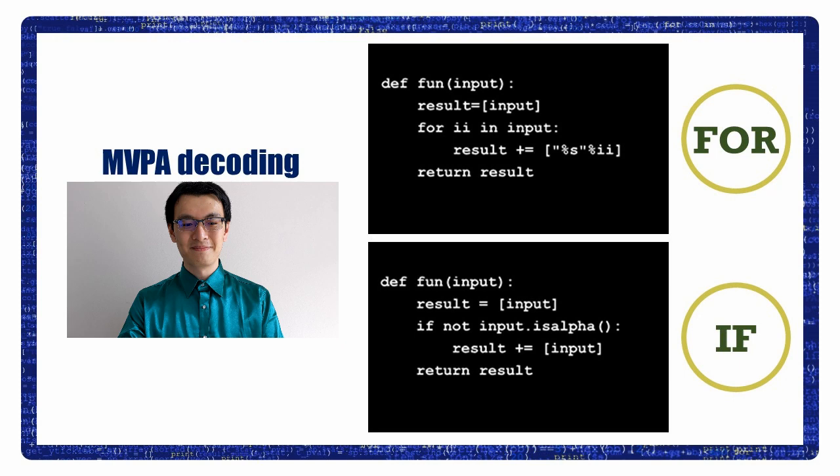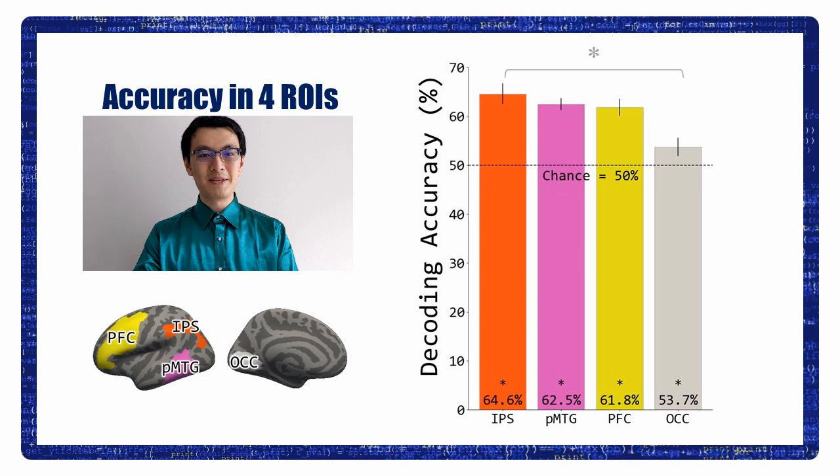We carry out a multivariate pattern analysis, or MVPA, in four regions of interest, or ROIs, in the left hemisphere. In the ROIs on the lateral surface, the decoding accuracy exceeded 60%, but in the primary visual cortex, the accuracy was barely greater than chance, which is 50%. This result suggested that the differences between types of functions were encoded in the frontal-parietal network, and this difference was more than just a difference in the low-level visual properties.